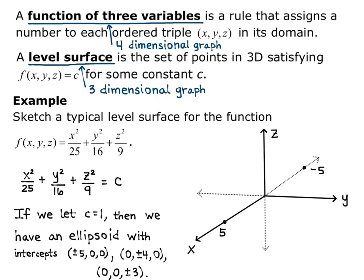I'll mark these on my 3D graph. First, I'll draw the ellipse with the y and z intercepts. Then, I'll draw the ellipse with the x and z intercepts. And finally, I'll draw the ellipse with the x and y intercepts. And together, we can hopefully see that this makes a three-dimensional ellipsoid.